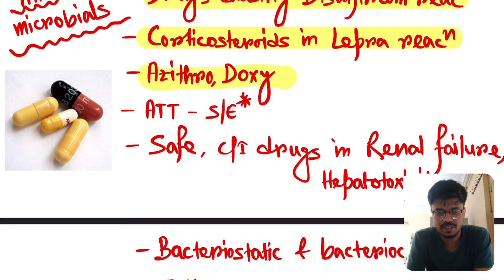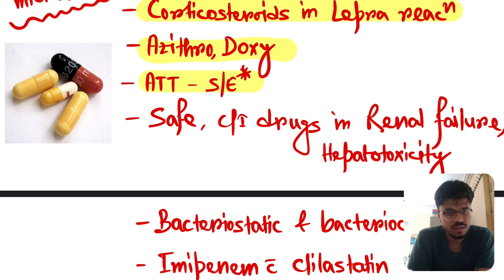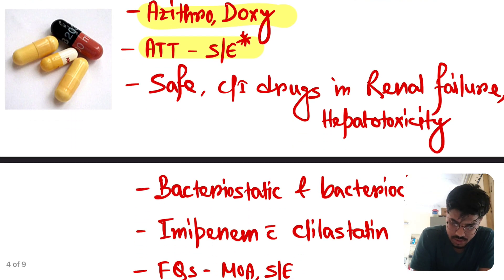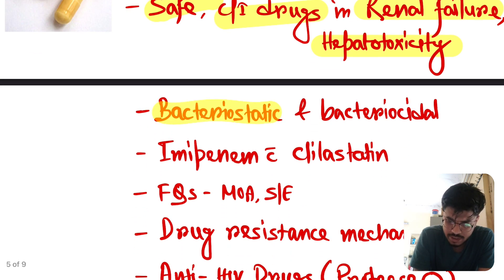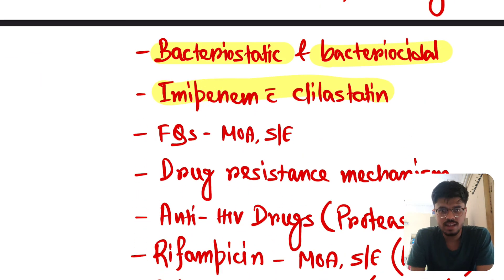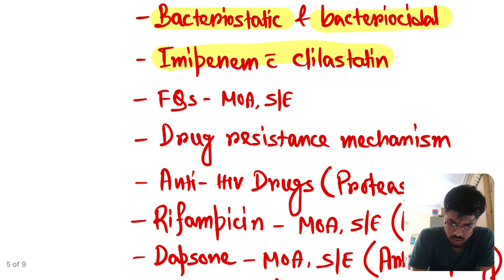Corticosteroid in lepra reaction. Azithromycin, doxycycline, mechanism of action, uses and side effects. ATT, all the side effects. Safe and contraindicated drugs in renal failure and hepatotoxicity. You have to make a list. Go through this and you can get a question from this. Bacteriostatic and bactericidal drugs. Imipenem with cilastatin. Advantage. Because cilastatin inhibits renal dehydropeptidase. So the longevity of imipenem is increased. You have to read all the details about imipenem and cilastatin.